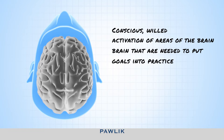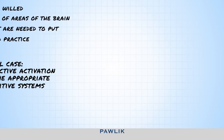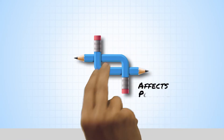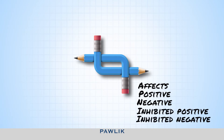After all, it would be ideal if we could simply use the cognitive system that is most useful in a given situation. The answer? Through effects. There are four different types of effect: positive, negative, inhibited positive, and inhibited negative effect. Effects are short, unconscious emotional states that cannot spontaneously be put into words.